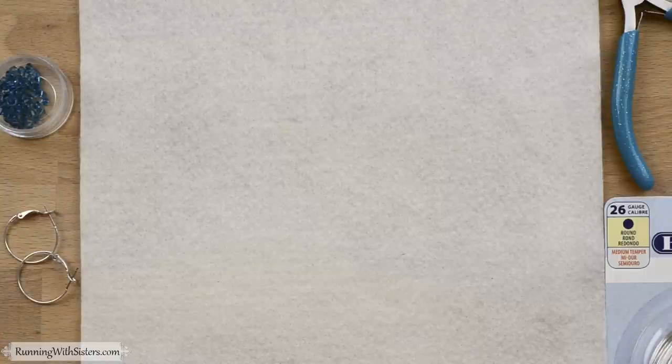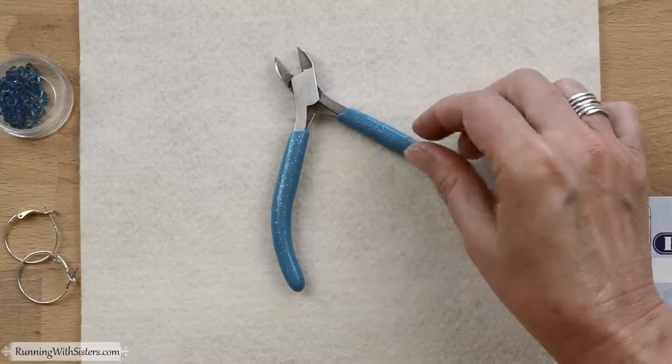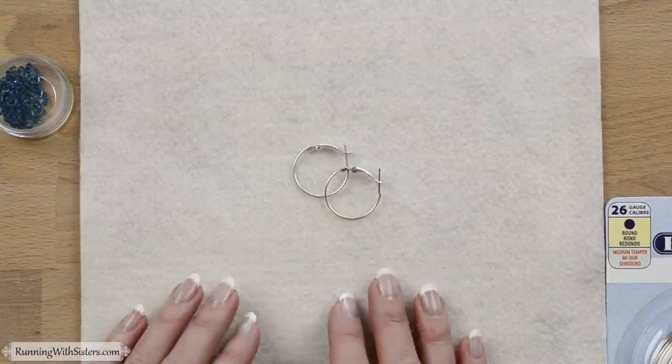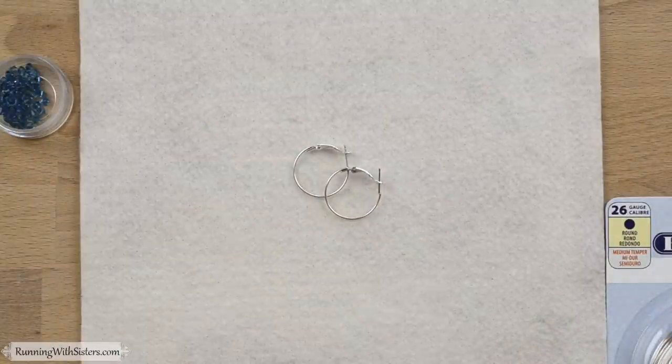Here are the tools and materials you need to make crystal wrapped earrings. For tools you only need wire cutters. Then you need two hoop earrings. These are from a craft store, but you could also get them at a department store.